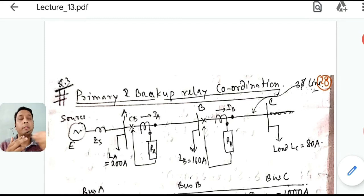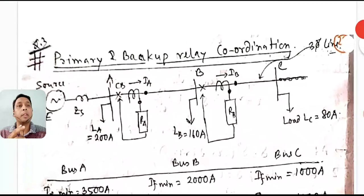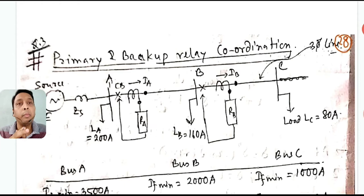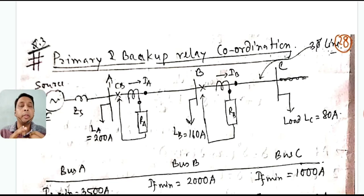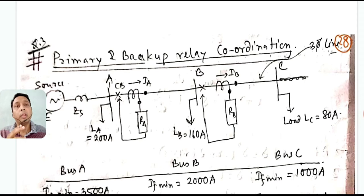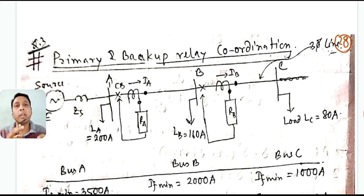Welcome to Lecture 14 of our protection series. We are continuing the coordination problem of primary and backup relays from the last class. In today's lecture, we will solve the numerical using DTOC — Definite Time Overcurrent — relay coordination.